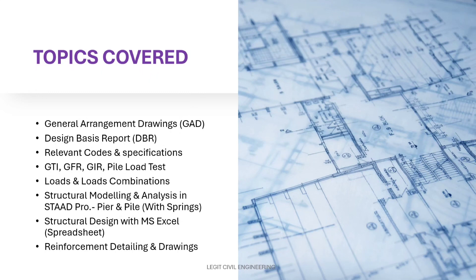This is the first session, so we'll be discussing the topics that will be covered. General Arrangement Drawing (GAD) mein kya details hoti hain, kya mention hoti hain, aur GED kis tarah se banti hai. Iske baad hum Design Basis Report dekhenge jo hume client se milti hai — DBR mein kya details mention hoti hain. Relevant codes: IRS CBC, IRS seismic code, Indian Railway Bridge Rules, IS codes aur IRC codes — sab ke baare mein baat karenge aur un se kya codal provisions lene hain.